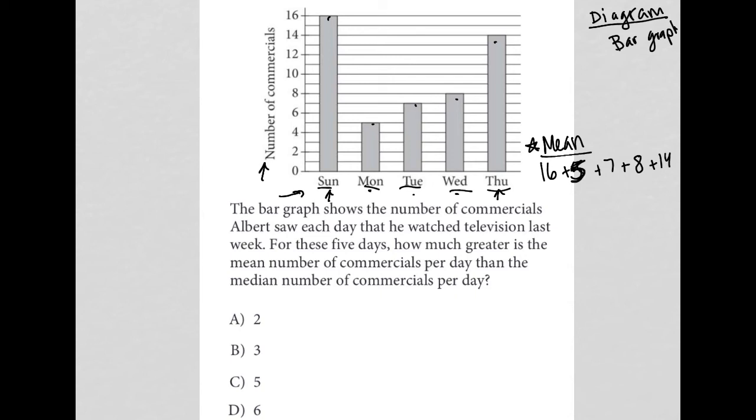And what I'm getting is that the mean is equal to 10. So on average, or the mean number of commercials that he saw was 10 per day. So how much greater is the mean number of commercials per day than the median number of commercials per day? Well, the median is a very different process, and that's where you just list out the number of commercials per day in ascending order.